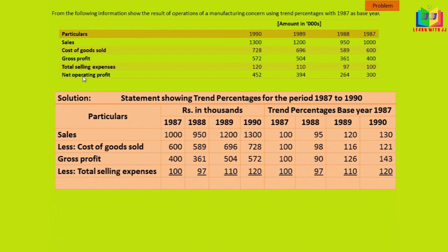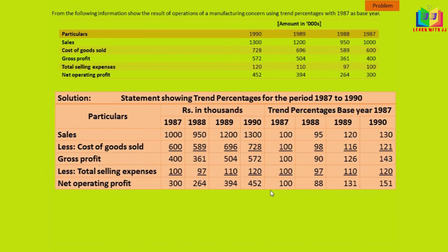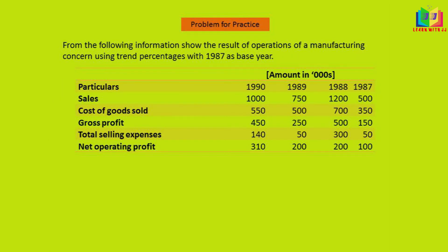And we will get next net operating profit. The same way we have to find out for net operating profit. The answer for net operating profit is 100, 88, 131, and 151. I hope now you are clear to find out this trend percentage. I have given you a small problem for you to practice. Thank you for your patient listening.